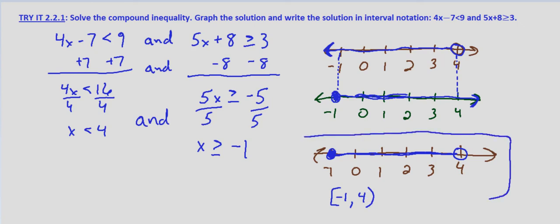So here is our solution to the compound inequality 4x minus 7 is less than 9 and 5x plus 8 is greater than or equal to 3. To check it, you could plug in any of these points that are graphed or that fall in the interval and verify that they do indeed make both inequalities true.